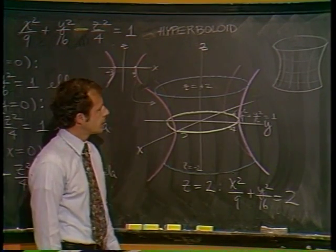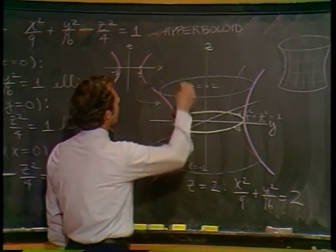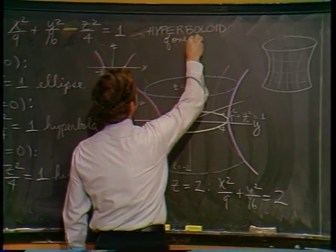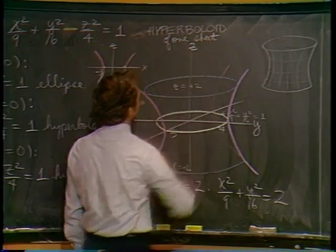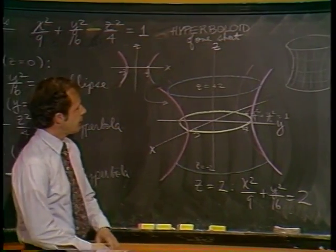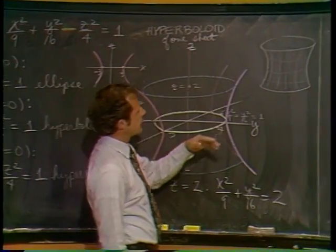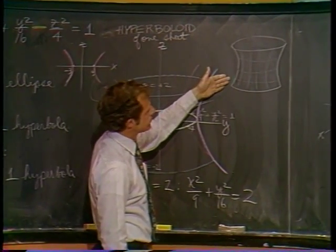Meaning that if you had a nice thin sheet of rubber, let's say, you could wrap it around itself, bend it in, and you've got the entire surface, basically.